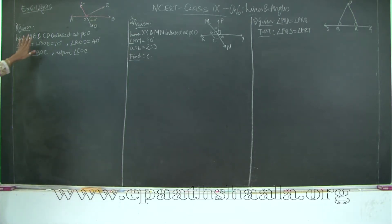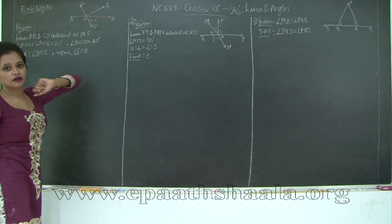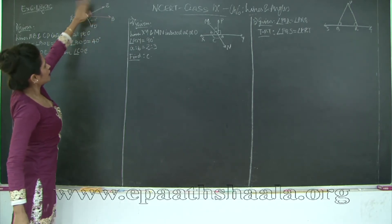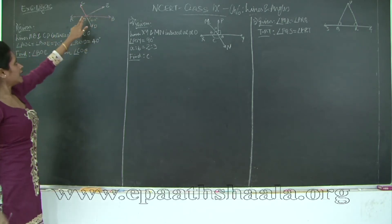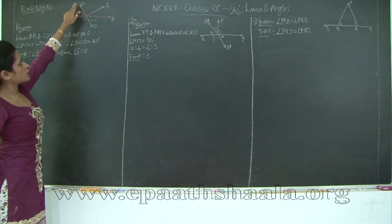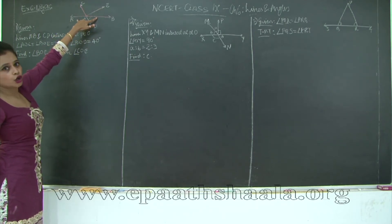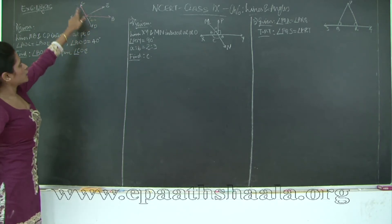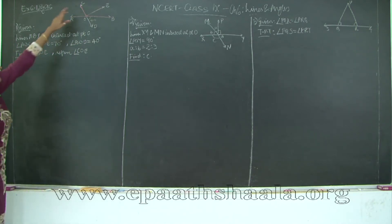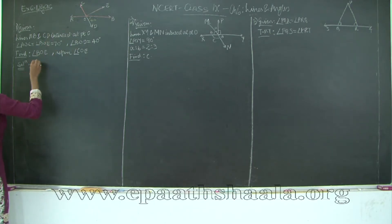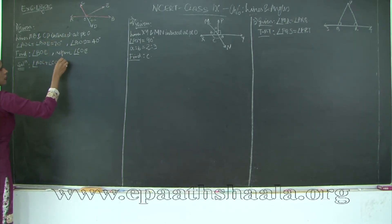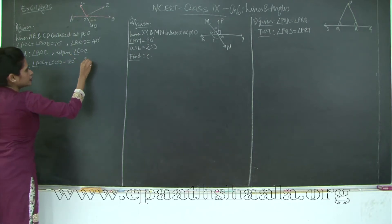First of all, you have a straight line AB out here. If you ignore ray OC or OE — let's say I am ignoring ray OE — what do I get? AB is a straight line and OC is the ray standing on it. OC is also the common arm, and these are the two different arms or non-common arms. So therefore, through the linear pair axiom, angle AOC plus angle COB is 180 degrees.